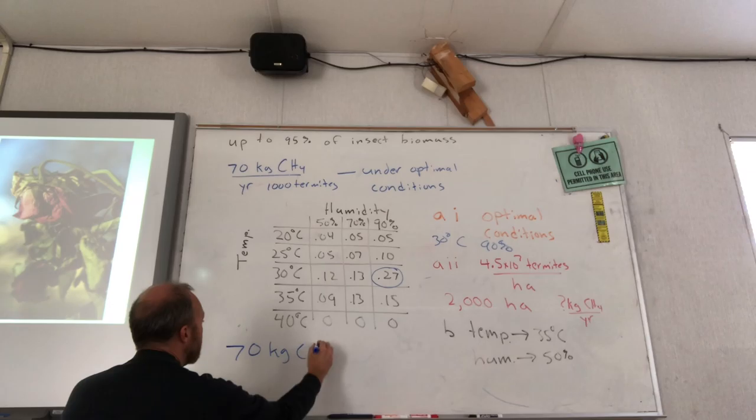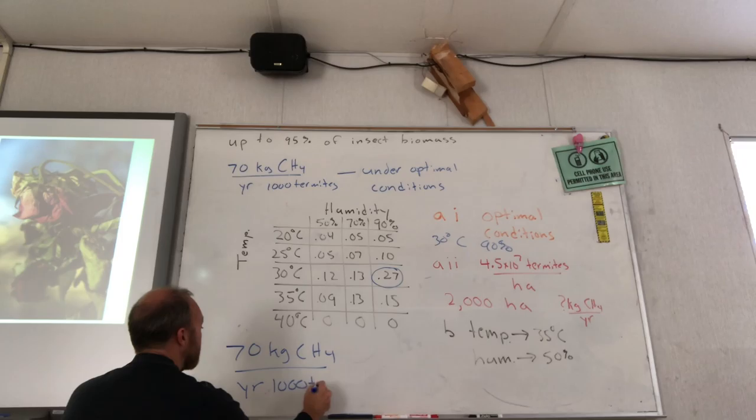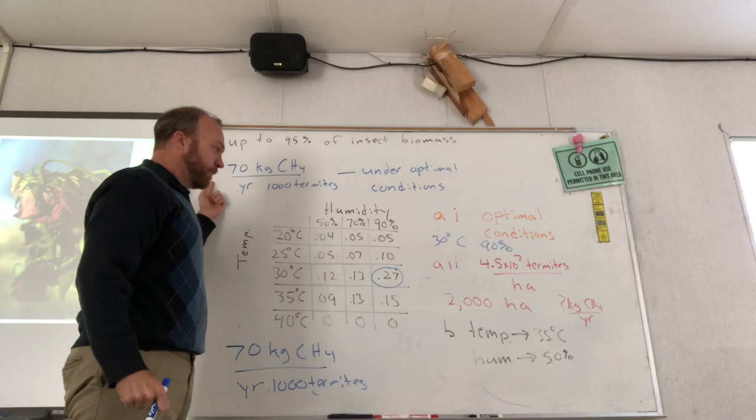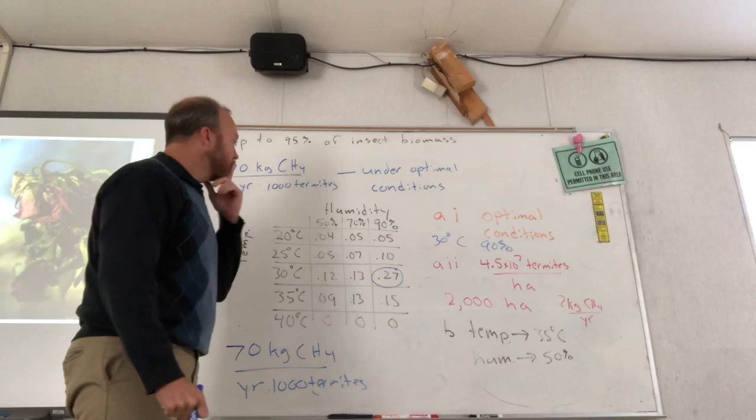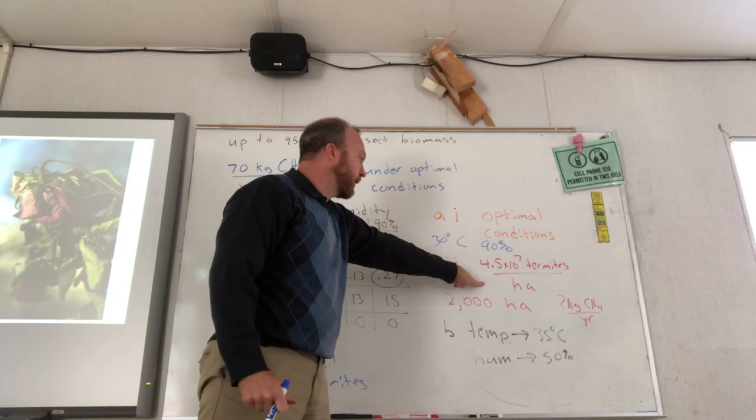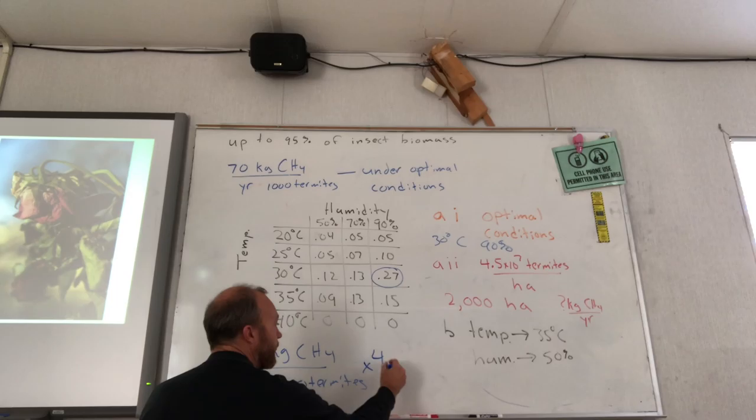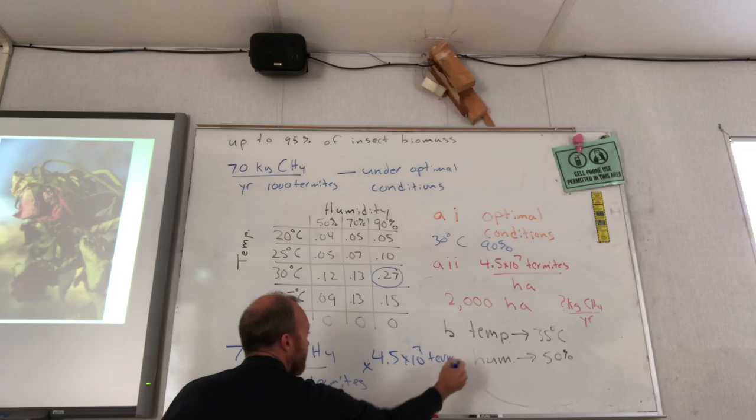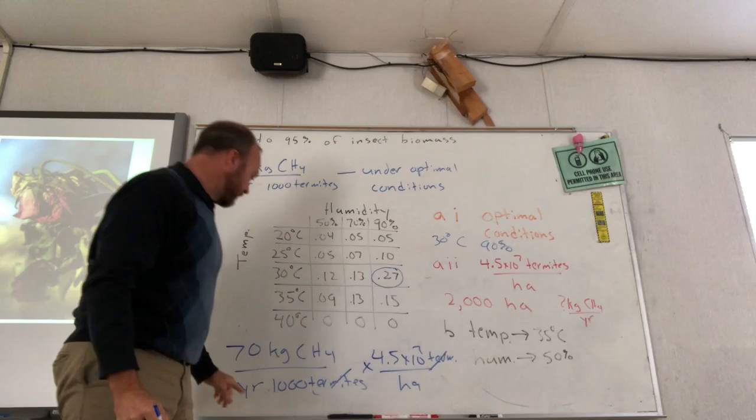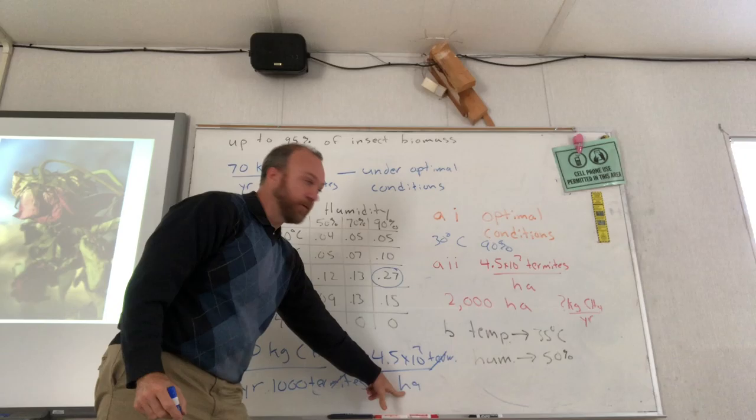So I'm going to start with kilograms because that's what I'm looking for. So I'm going to start my problem by saying I've got 70 kilograms of methane produced per year for 1,000 termites. In other words, I'm starting with what was given to me. Now you'll notice there's a couple of things in here that I don't want. I want kilograms of methane per year, but I don't want termites. So I need to get rid of termites. So I look around at my other information. Well, there's this many termites per hectare. Notice termites is on top, hectares on bottom. If we're following the units, if I come over here and I multiply 4.5 times 10 to the 7th termites per hectare, termites cancels. So at this point I would have kilograms of methane per year per hectare.